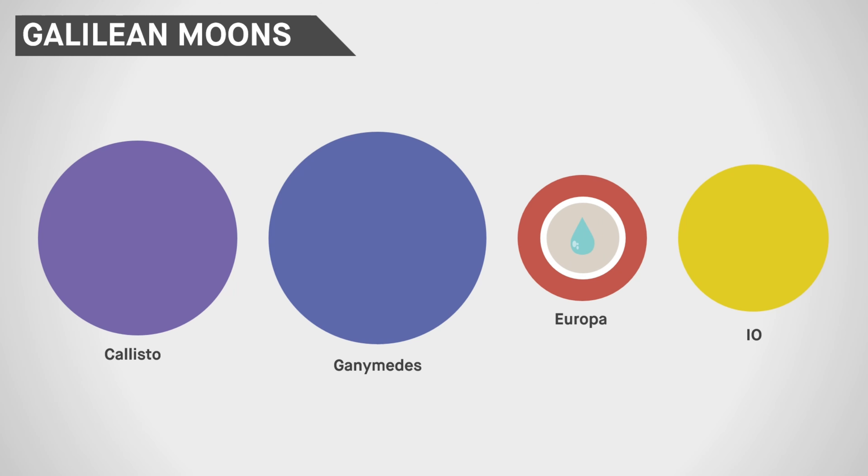Europa, covered in a smooth icy crust, hides a global ocean beneath its surface, an intriguing potential abode for life.